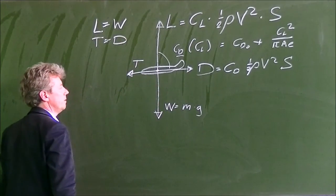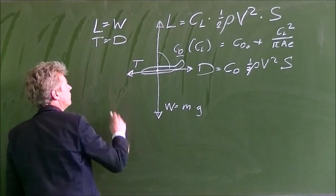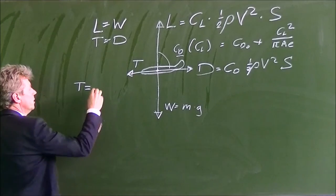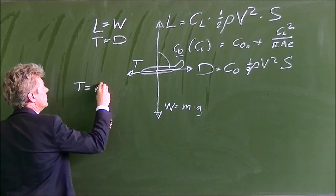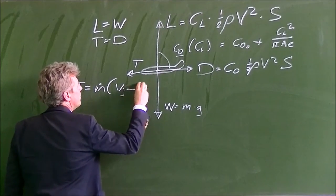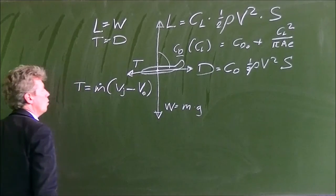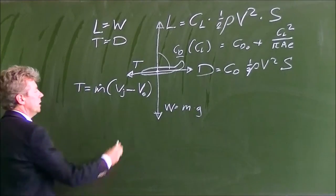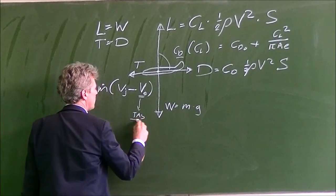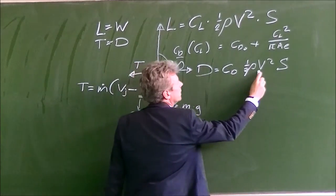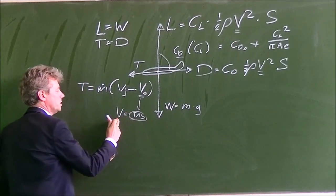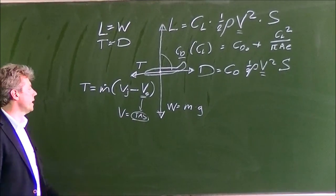So you can use that same equation to calculate the thrust. And for the thrust of course we also know that it is, from the propulsion lecture, it is the mass flow times the jet speed minus the initial speed of the air when it enters the engine. And this initial speed of course is basically the true air speed which you also use in this equation the V. If you just have the V for velocity, this is the true air speed.